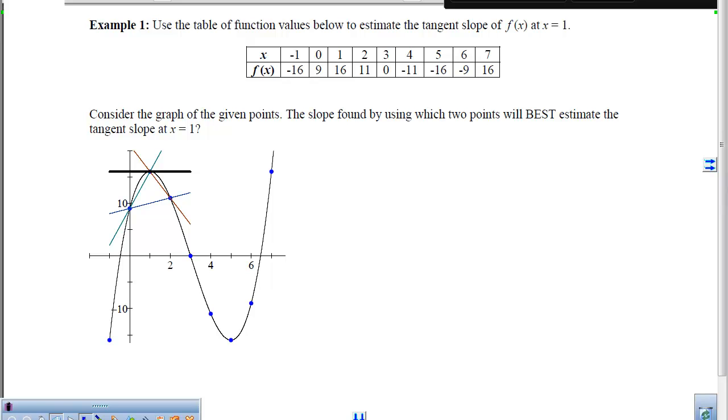The question becomes, which data do I use? Well, if I plot all of the points that are given to me, and then connect them in a smooth curve, we can see that we get the point negative 1, negative 16, 0, 9, 1, 16, etc. And we can kind of eyeball what we think that tangent slope at the point 1, 16 would look like. However, we can't compute that, and we don't know for sure that it's not doing something funky in between those points.